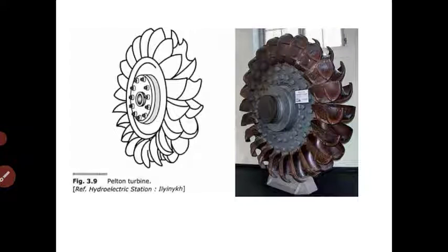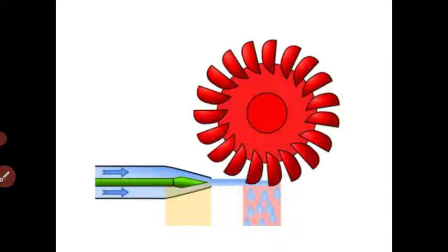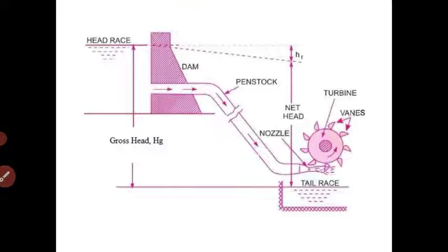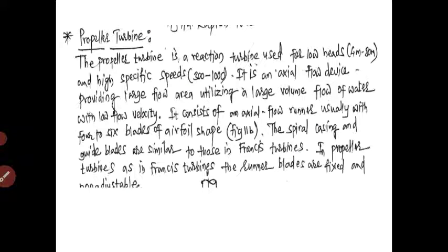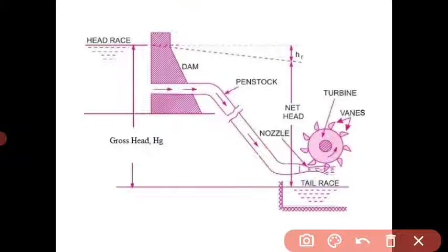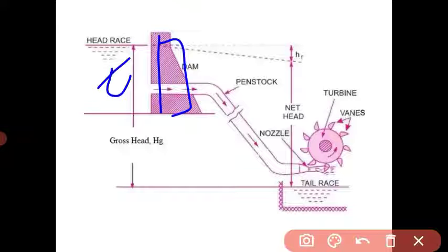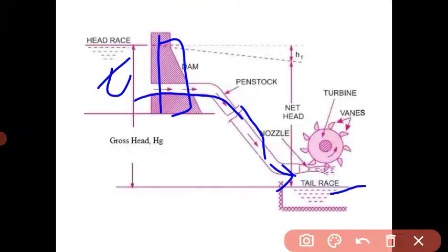Here is an image of the Pelton wheel and a schematic diagram showing where the Pelton turbine is placed. A dam is constructed across the river, and water is taken through the penstock to the turbine. The water then comes down to the tailrace, which is the area after operating the turbine blades.